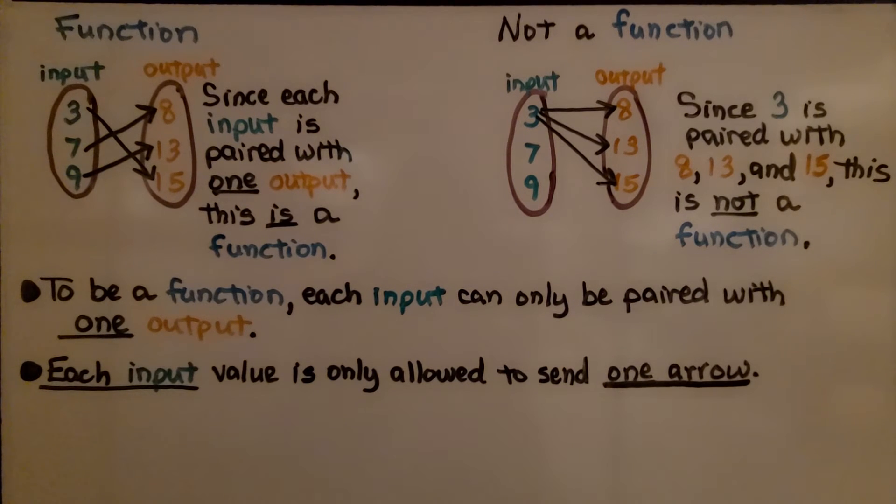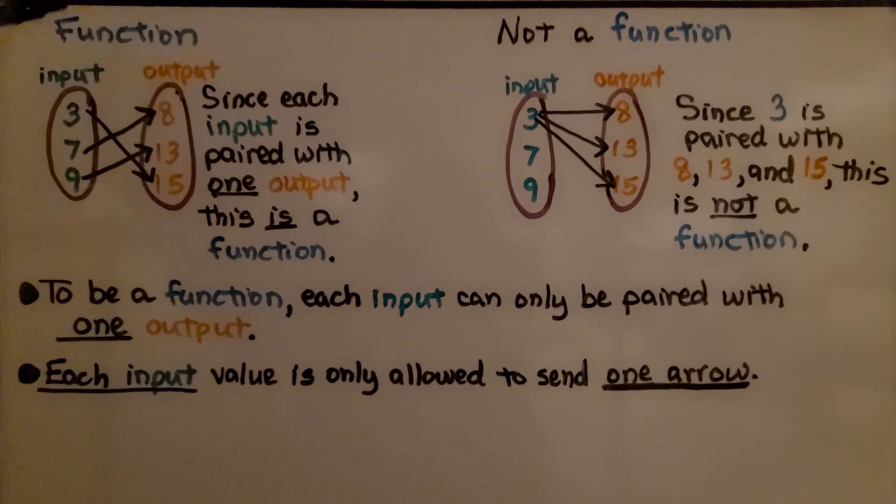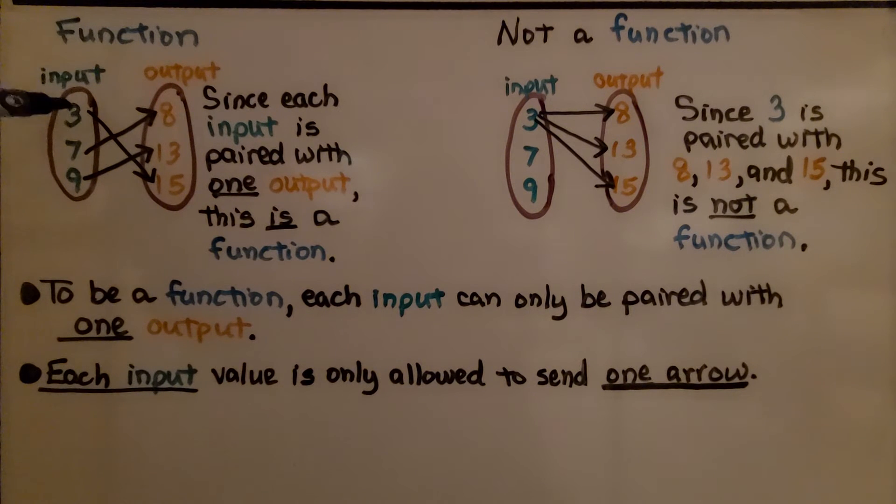Now let's take a look at these two. Here we have a function, this is our input, this is our output. Let's take a look at the input numbers. 3 has one arrow going to the 15, 7 has one arrow going to the 8, 9 has one arrow going to the 13. Since each input is paired with one output, this is a function.